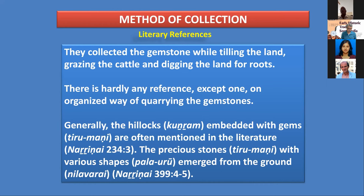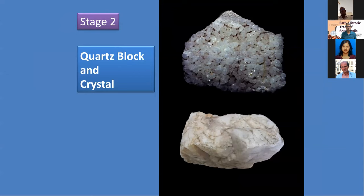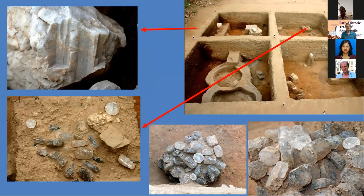This is a quartz mine near Kangayam, at a place called Arashampalayan, now under the control of the Geological Survey of India. This is one of the ancient mines of that period; we are getting a lot of archaeological sites nearby, close to gem industries and raw material zones. The top image is the natural specimen and the bottom one was collected from our archaeological excavation at Kodumanal. You can see sizzle marks — the hardness of this quartz is number seven, and they would have required a steel tool to cut it.